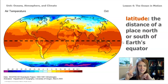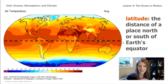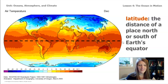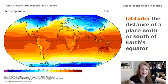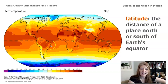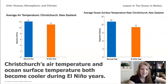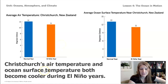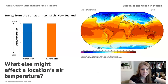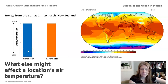The map we looked at in lesson three was static — it stayed still. I found this graphic because temperatures can be warmer or colder at different times of year. As a student climatologist, you learned that the closer a location is to the equator, the more energy it gets from the sun. But Christchurch's air temperature and ocean surface temperature both become cooler during El Niño years, even though the city's latitude is not changing.